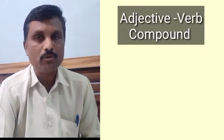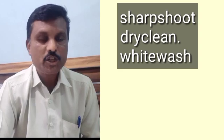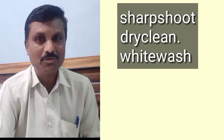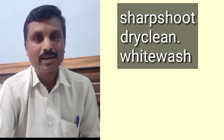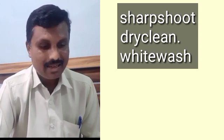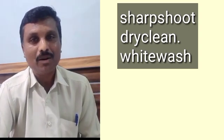Adjective-verb compounding is the process where an adjective compounds with a verb. The adjective comes first and the verb comes later. For example, 'sharp' is an adjective and 'shoot' is a verb, so 'sharpshoot' is an adjective-verb compound. 'Dry' is an adjective and 'clean' is a verb — 'dry clean'. 'White' is an adjective and 'wash' is a verb — 'whitewash'.